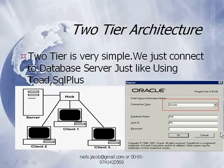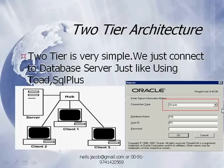How do we use or connect to PeopleSoft using the two-tier architecture? We can do so by using the Application Designer or PeopleTools. When the connection type points to a database type like Oracle, SQL, or DB2, then we are using two-tier architecture and connecting to the PeopleSoft database.